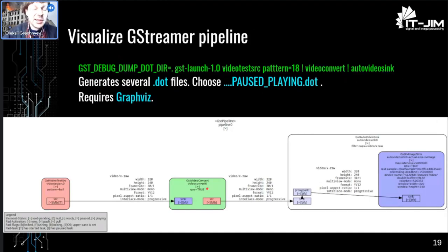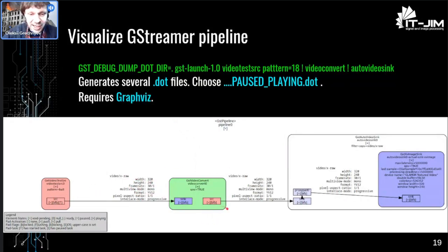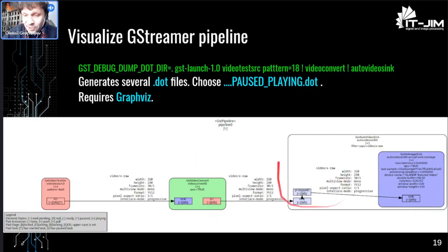A GStreamer pipeline can be visualized with GraphViz software. It's a really large image with a lot of information — caps, pads, and everything. Auto video sink actually becomes a platform-dependent element like xvimagesink. High-level elements reduce to lower-level elements, and you can see all of that with this visualization.